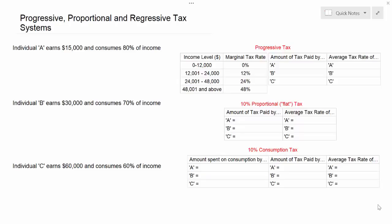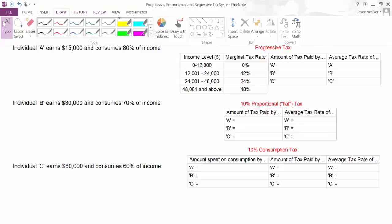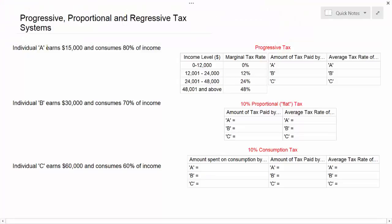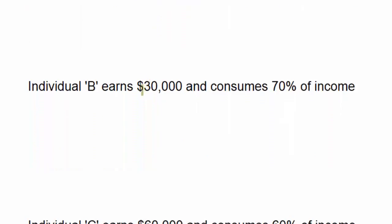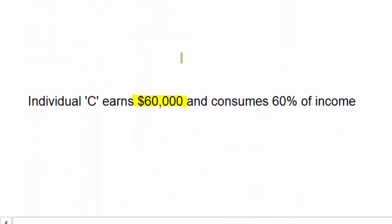Let's start by looking at the three individuals whose income we're going to examine. Our first individual, A, earns $15,000, and we're going to assume that individual consumes 80% of his income every year, meaning that he spends 80% of his income on goods and services. Individual B earns $30,000 per year and consumes 70% of his income, while Individual C earns $60,000 per year and consumes 60% of his income.